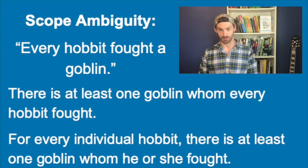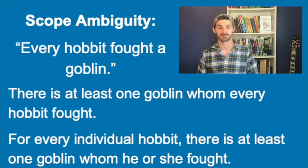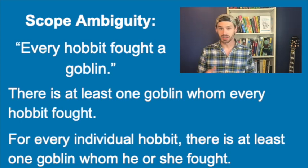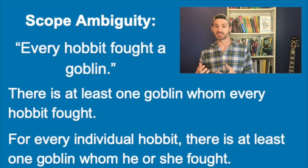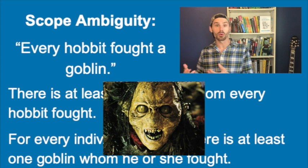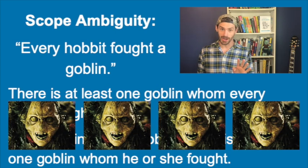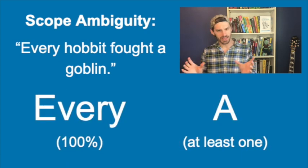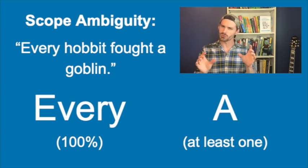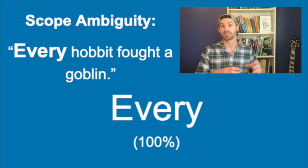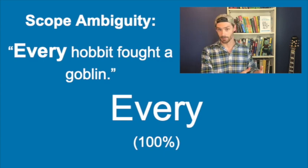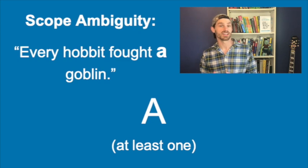Scope ambiguity is a really interesting one — it causes confusion in our everyday conversations. For example, the sentence "every hobbit fought a goblin" could mean a few different things. Assuming there are four hobbits in the battle, this sentence could mean all four were ganging up on one poor, lonely goblin, or that there were four goblins each being fought by one hobbit. The ambiguity comes because there are two quantifiers, and we don't know which one is more important. The word "every" tells us we're dealing with 100% of the items in a set — in this case, all hobbits in the battle — and the word "a" tells us we're dealing with at least one item. One of these quantifiers has a bigger scope.